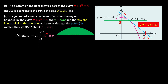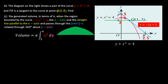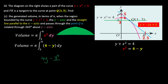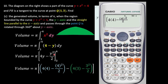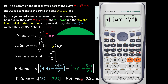We are integrating with respect to y but have x, so we substitute x in terms of y. From the curve equation y = -x² + 4, we get x² = 4 - y. Substituting back, the integral becomes π∫(4 - y) dy from 3 to 4. Integrating — power increases by 1, divided by new power — we evaluate from 3 to 4: upper limit minus lower limit gives 8 - 7.5.